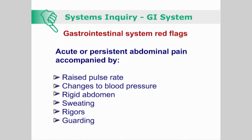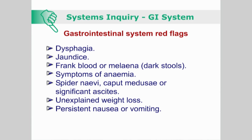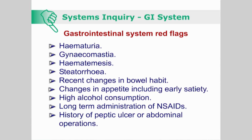Gastrointestinal system red flags include: acute or persistent abdominal pain, especially when accompanied by a raised pulse rate and changes to blood pressure, rigid abdomen, sweating, rigors and guarding; dysphagia; jaundice; frank blood on the stool; melena, that is dark tarry stools; symptoms of anaemia; spider nevi; caput medusae or significant ascites; unexplained weight loss; persistent nausea or vomiting; hematuria; gynecomastia; hematemesis; steatorrhea; recent changes in bowel habit; changes in appetite including early satiety; high alcohol consumption; long-term administration of non-steroidal anti-inflammatory drugs; and history of peptic ulcer or abdominal operations.